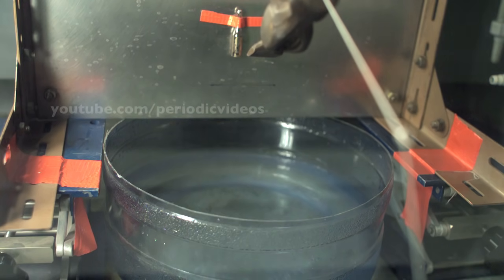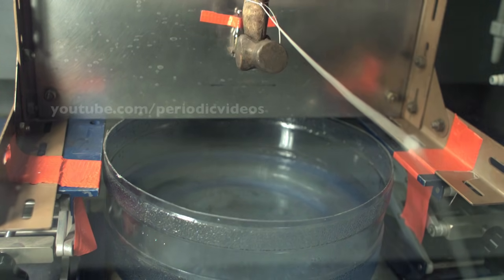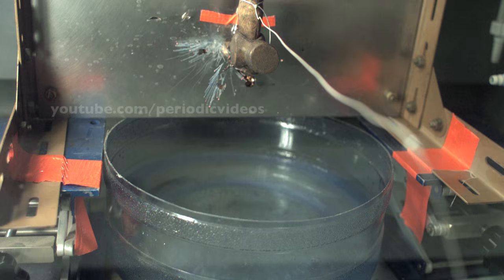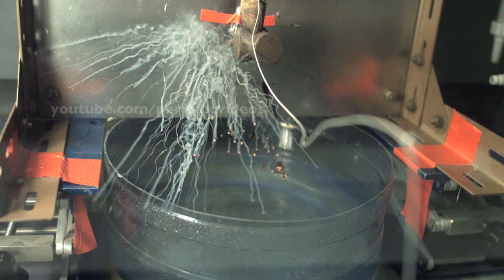Because high-speed filming needs very bright light, the heat of the light made sure that caesium, which has a low melting point, was nicely liquid before we broke the ampoule.